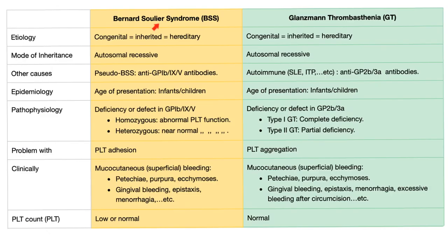Let's compare Bernard-Soulier and Glanzmann's. Both are congenital. Mode of inheritance: both are autosomal recessive. Other causes: we have pseudo-Bernard-Soulier with antibodies, and Glanzmann's can be autoimmune — antibodies attacking the receptor — and can occur with other autoimmune diseases.